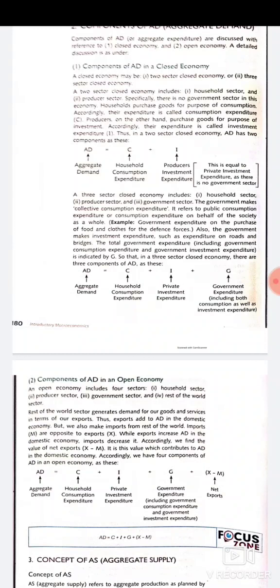In a three-sector closed economy, the government sector is also included. The government makes collective consumption expenditure — referring to public consumption expenditure on behalf of society as a whole — and also makes investment expenditure such as expenditure on roads and bridges. So in a three-sector closed economy, aggregate demand equals household consumption expenditure plus investment expenditure plus government expenditure.